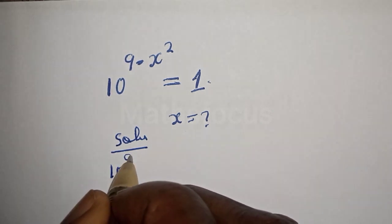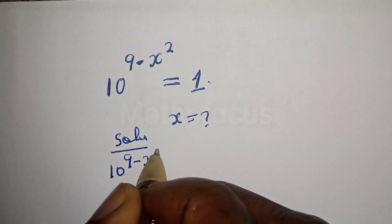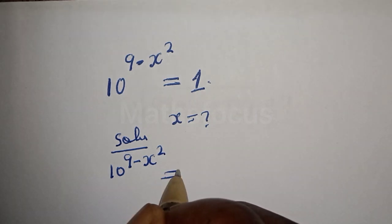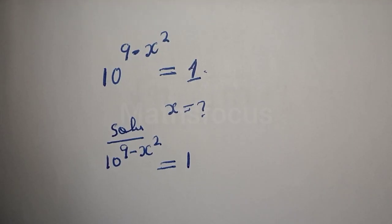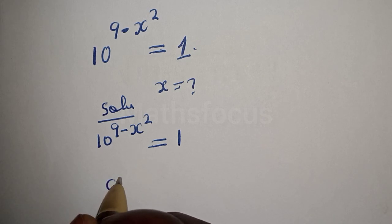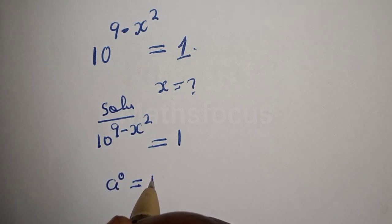10 raised to power 9 minus x squared is equal to 1. Take note of this: if you have a raised to power 0, this is equal to 1.